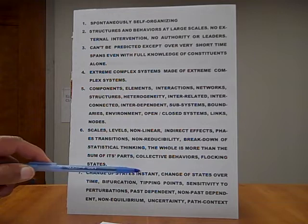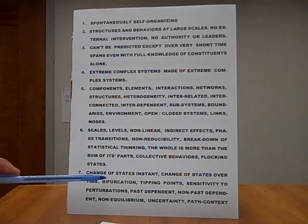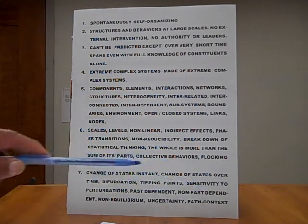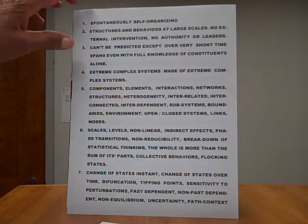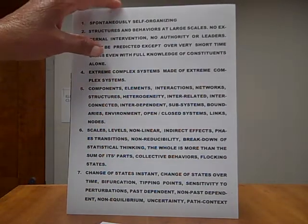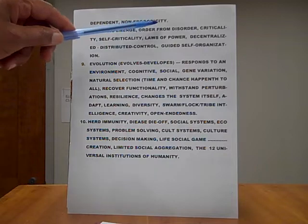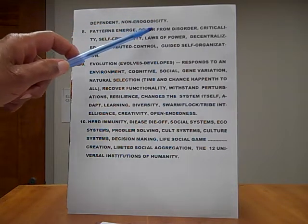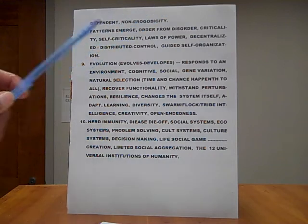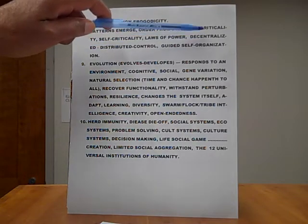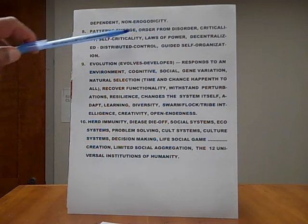Number seven, change of states instantly. Change of states over time. Bifurcation, tipping points, sensitivity to perturbations, past dependent, non-past dependent, non-equilibrium, uncertainty, path context dependent, non-eurogodicity. Number eight, patterns emerge, order from disorder, criticality, self-criticality, laws of power. Each one of these words, in the context of complexity, can fill a 300 to 500 page book. Laws of power, decentralized, distributed control, guided, self-organization.